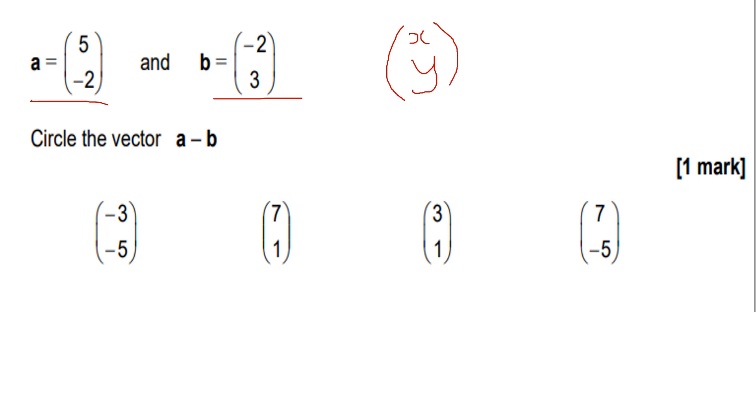Circle the vector a subtract b. So I do five minus two, subtract negative two three. I just subtract my x components and subtract my y components, being careful with any negatives.